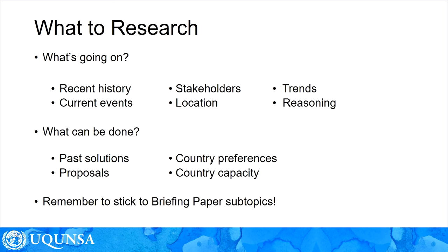Number one: who are the relevant stakeholders? In other words, which countries, organizations, or people are most relevant to the topic, and how are they involved? Number two: where is this topic most relevant? Some countries or locations such as urban or rural areas might be particularly relevant. Number three: are there any relevant trends in the topic? For example, if you're discussing a war, which side is currently winning, and will that continue? And number four — and I think the most important of all — what is everyone's reasoning for their behavior? What do various nations and organizations believe about the topic, how do they justify it, and why is this happening?